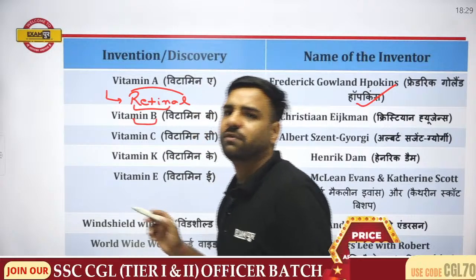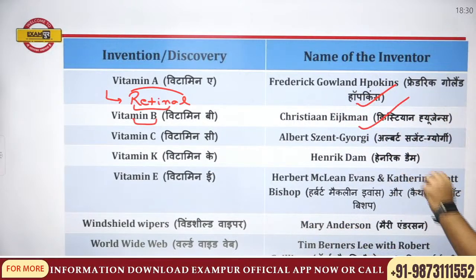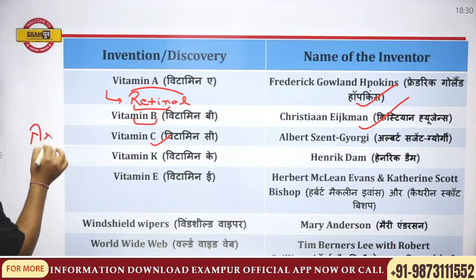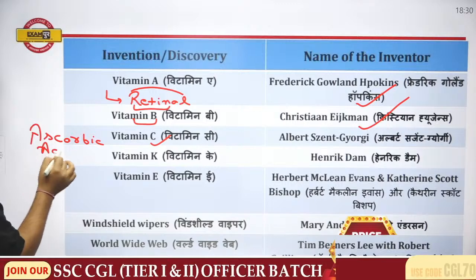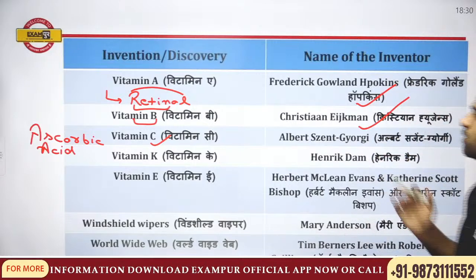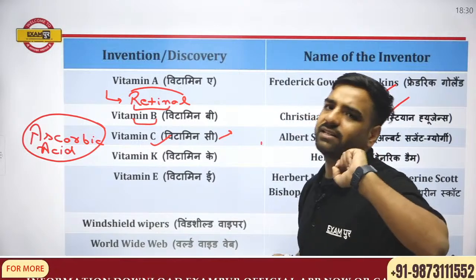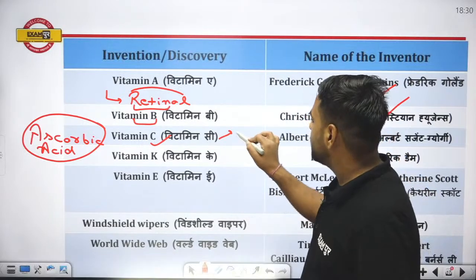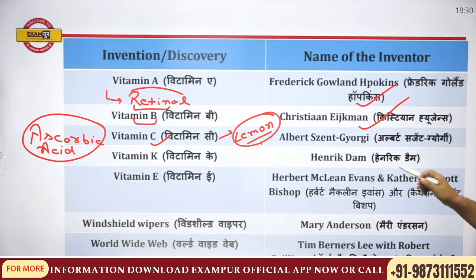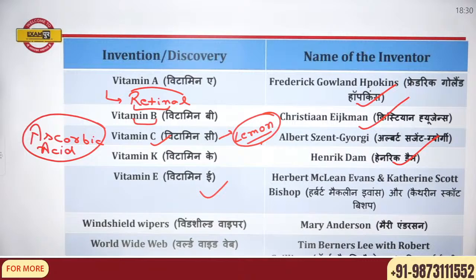Vitamin B deficiency is known as beriberi; it was discovered by Christiaan Eijkman. Vitamin C, found in citrus fruits, has the chemical name ascorbic acid. It was discovered by Albert Szent-Györgyi. In the examination, maximum Vitamin C is found in lemon — please remember that.